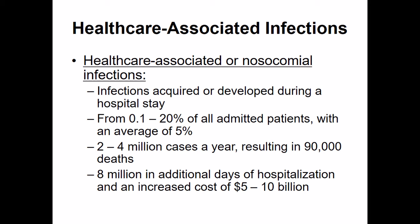The average is one out of 20 people that enter a hospital picks up a disease from being in the hospital. When we look at the number of cases in the United States, we have about 2 to 4 million cases of nosocomial infections a year, resulting in approximately 90,000 deaths annually. In terms of dollars, this costs our country between 5 and 10 billion dollars annually.